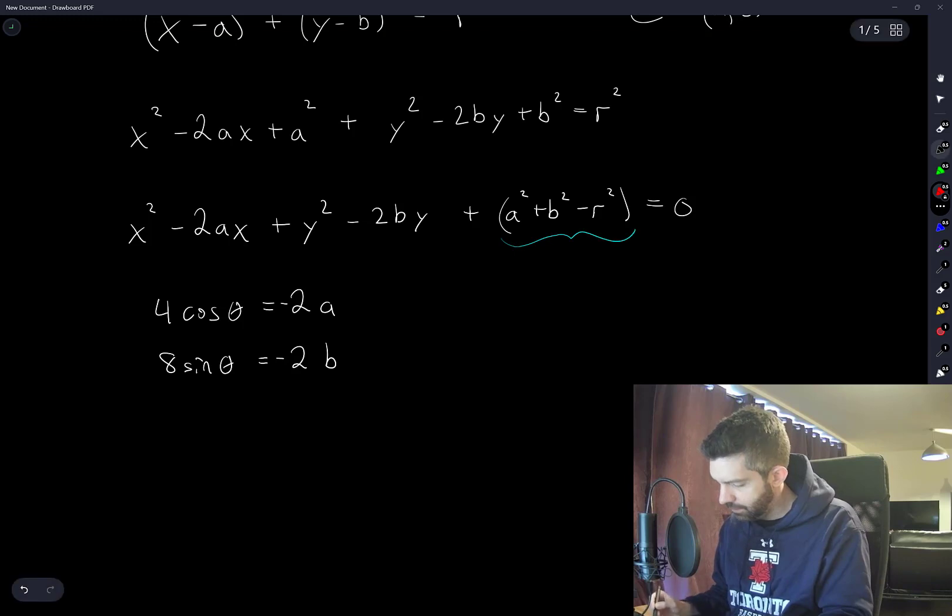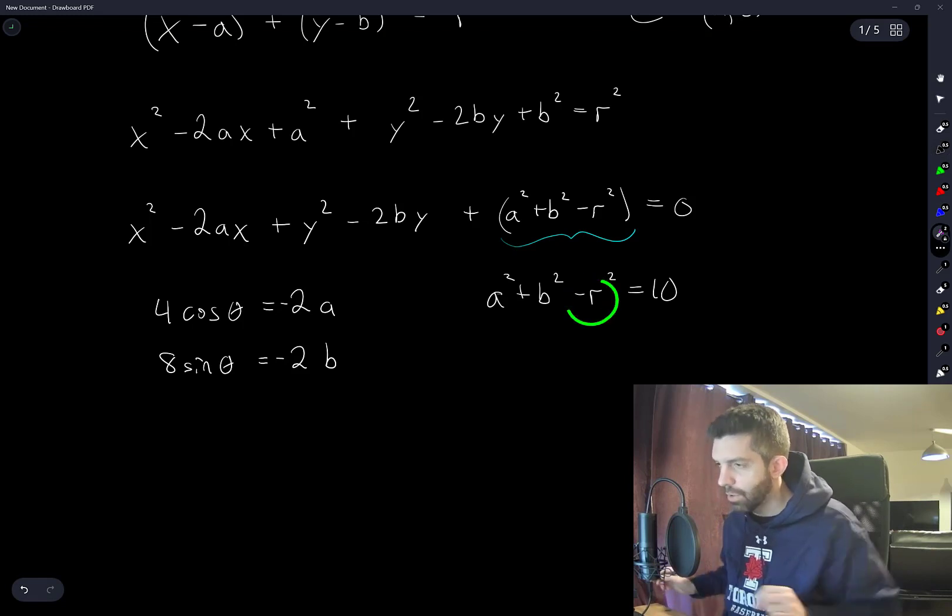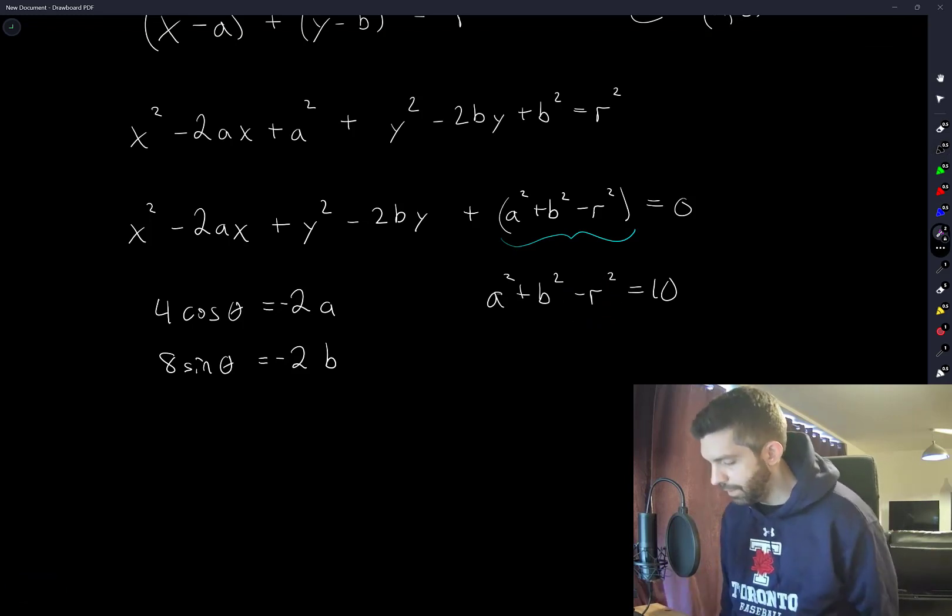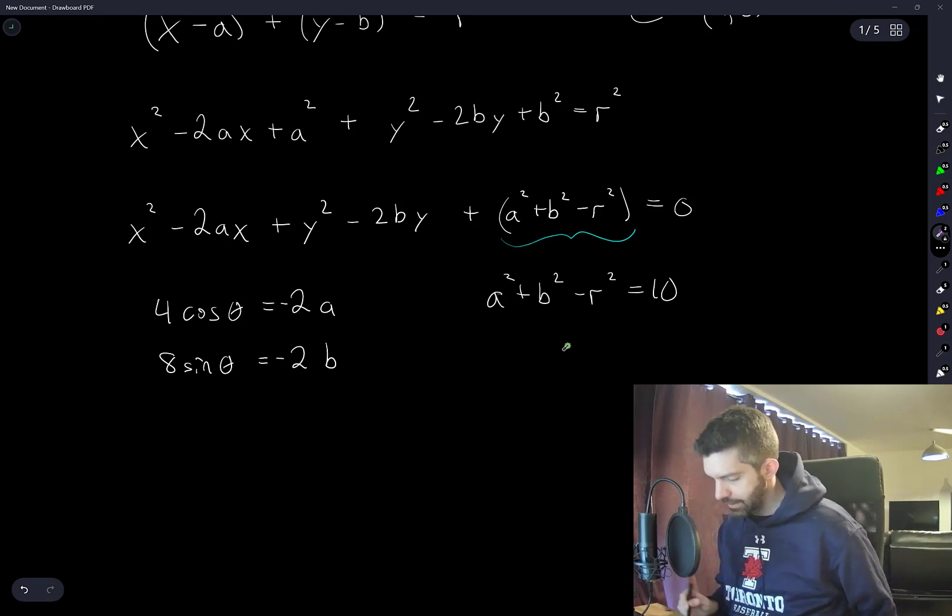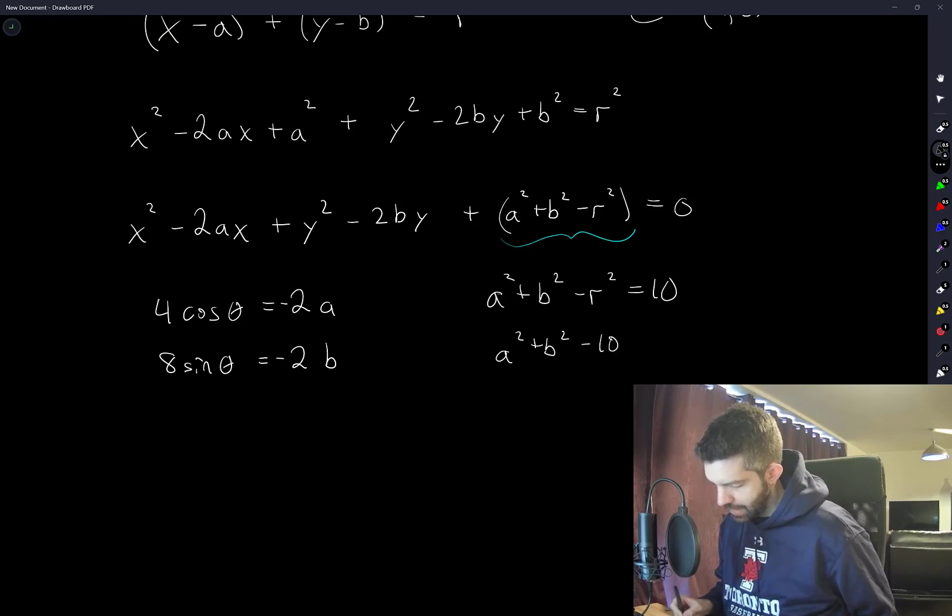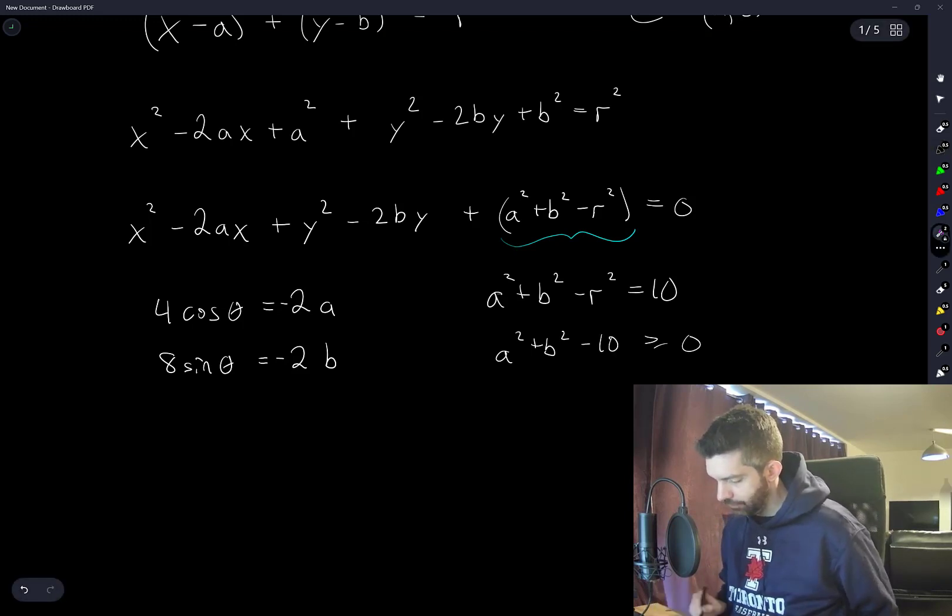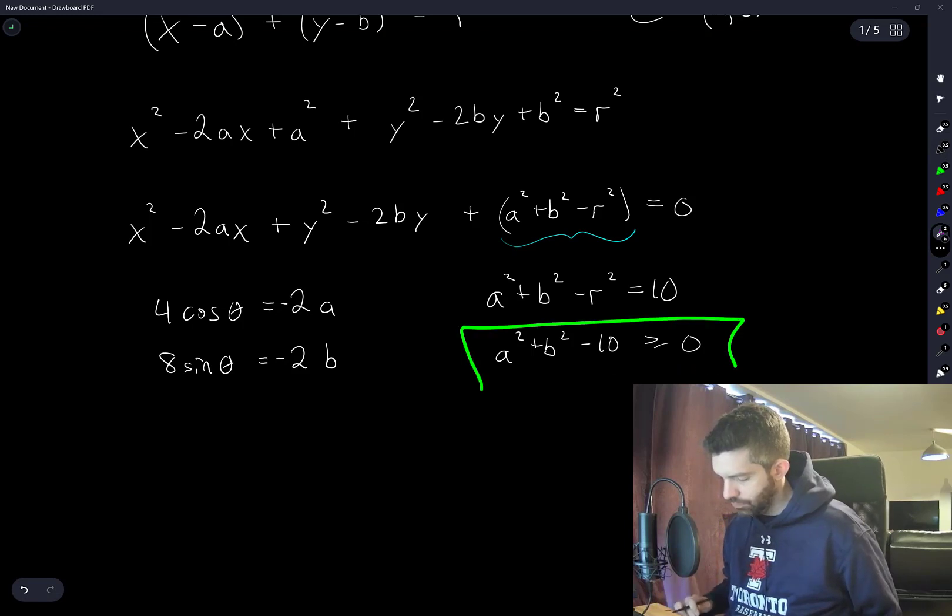This has to be, or wait, no. What do we need? Right, a² + b² - r² has to be equal to 10. And r² must be positive. OK, so I need a² + b² - 10 should be greater than or equal to 0. And that's the constraint that I need to enforce.